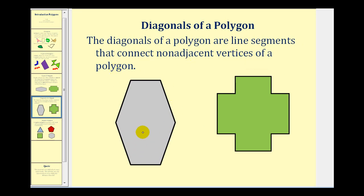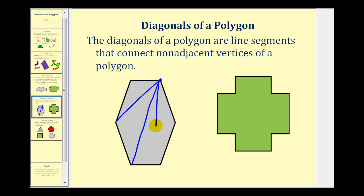Looking at this polygon here, if we select one vertex, the diagonals from this vertex would be all the segments connecting it with any non-adjacent vertex. Adjacent vertices are the vertices next to this vertex — so this would be an adjacent vertex and so would this one. The diagonals from this point would be this segment here, this segment here, and this segment here.